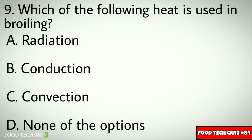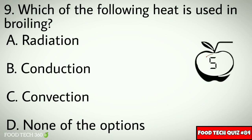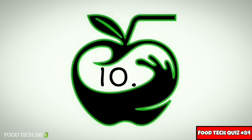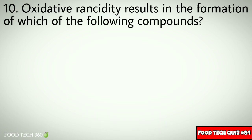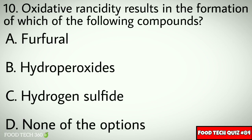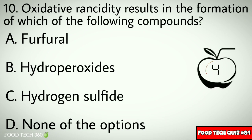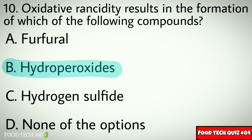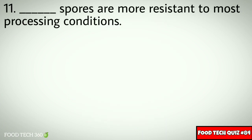Question number 9: Which of the following heat is used in broiling? Options: A. Radiation, B. Conduction, C. Convection, D. None of the options. Correct answer: B. Hydroperoxides.